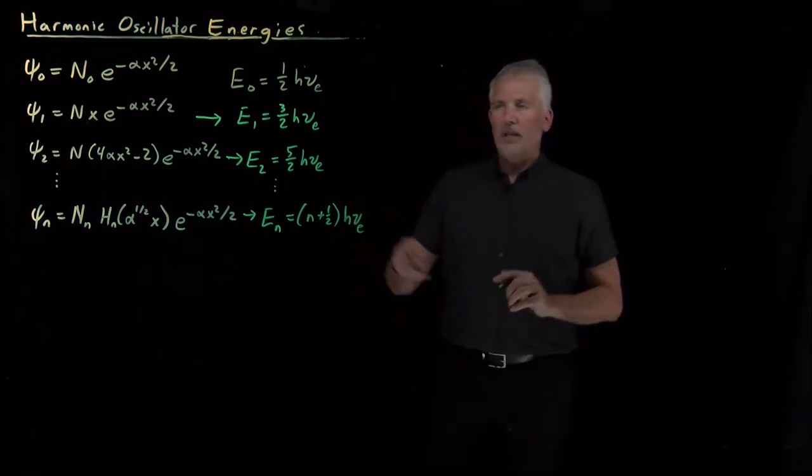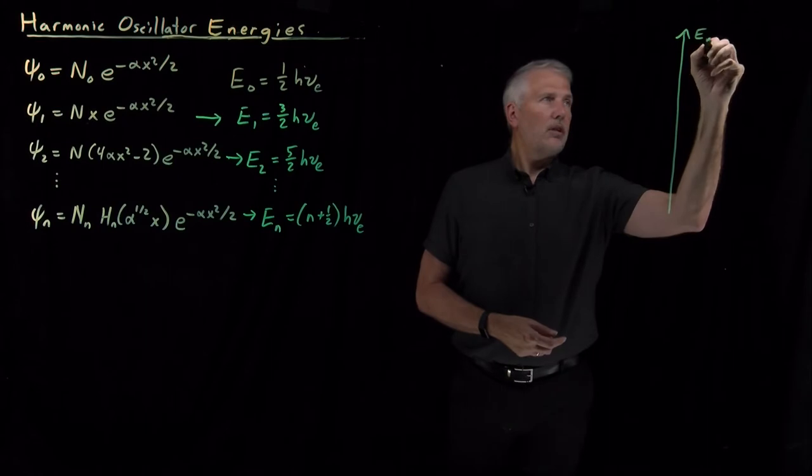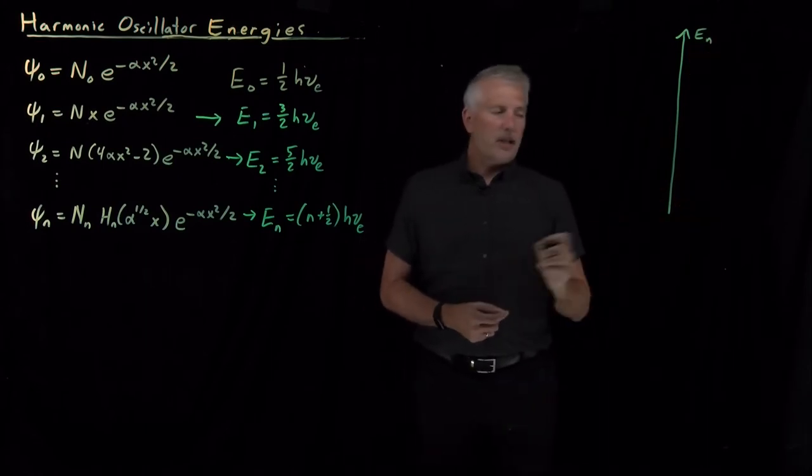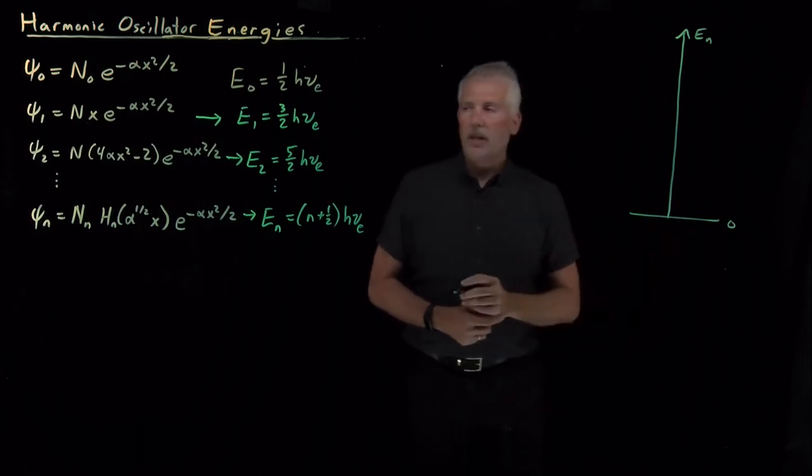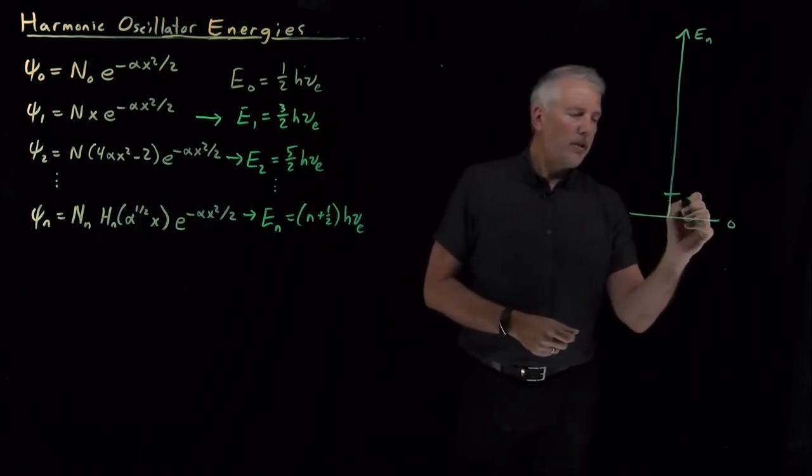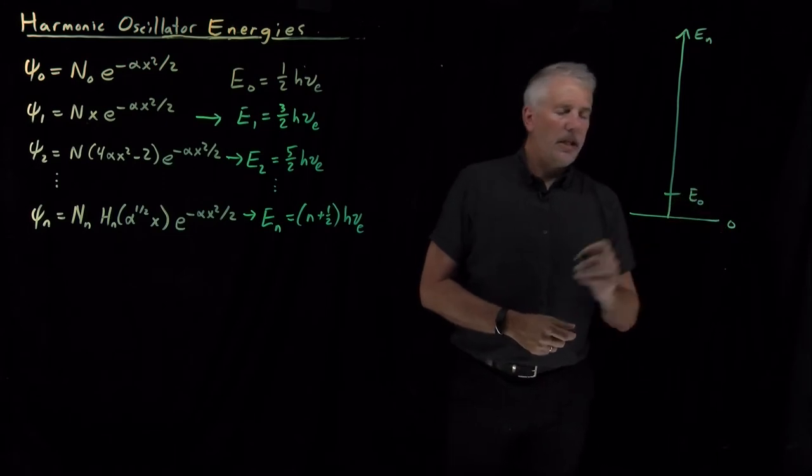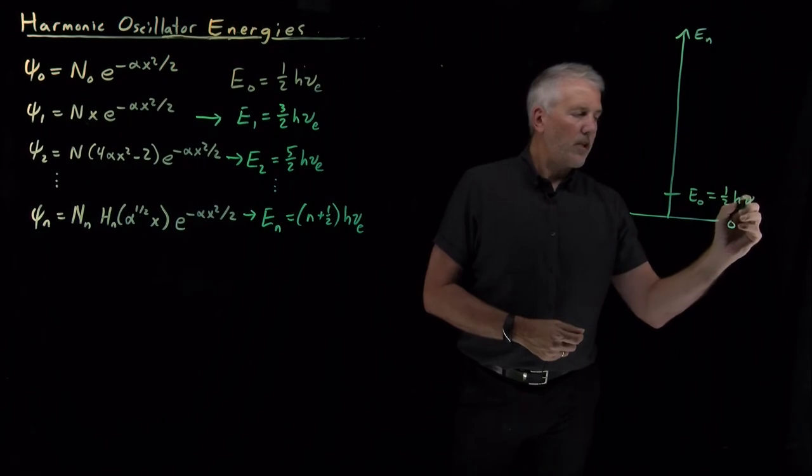So what that means if I draw an energy ladder for the energy levels of a harmonic oscillator. So here's the bottom. There's zero energy. The ground state, the lowest energy wave function, is this one with energy E_0, which is equal to one-half times this collection of constants, h times nu.